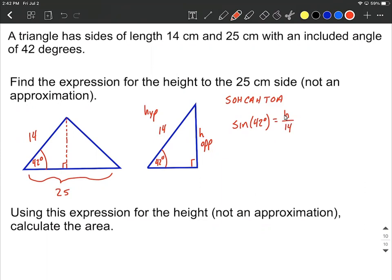Next, what we want to do is we want to represent our height H. We want to have that on one side all by itself. So to do this, all we have to do is move the 14 to the other side by multiplying both sides by 14. This will give us the representation of H equals 14 multiplied by the sine of 42 degrees. And that completes the first part.